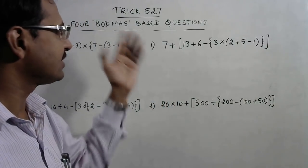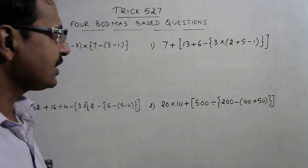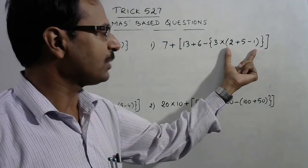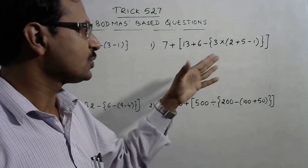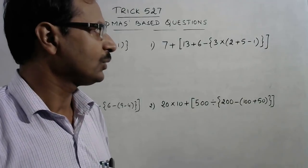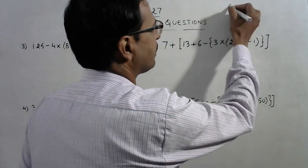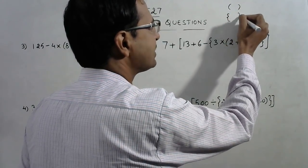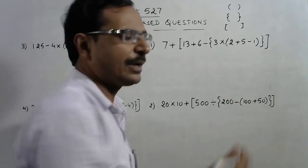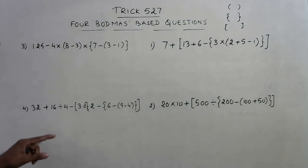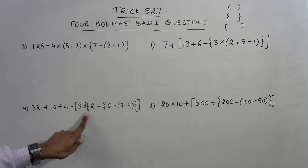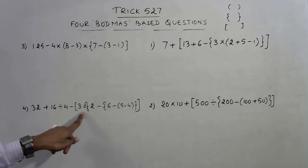Now let us apply this sequence. There are three brackets here: the simple bracket, the curly bracket, and the square bracket. First we solve the simple bracket, then the curly bracket, then the square bracket — that is well known. Sometimes we also have 'of', which means multiply, so we need to remove 'of' as well.